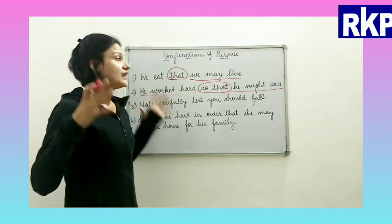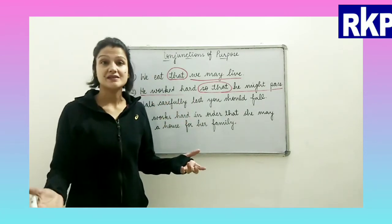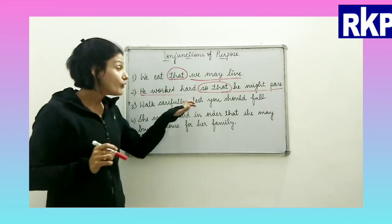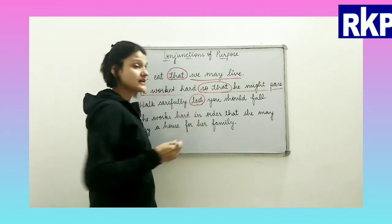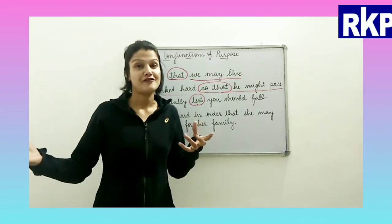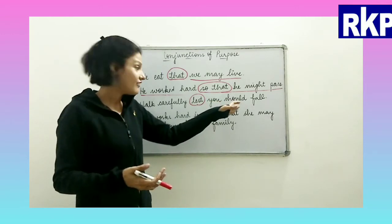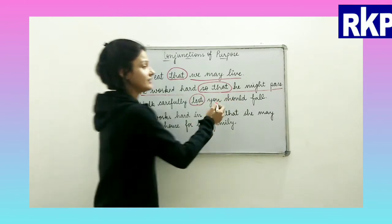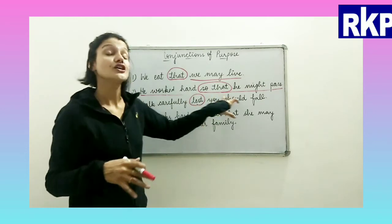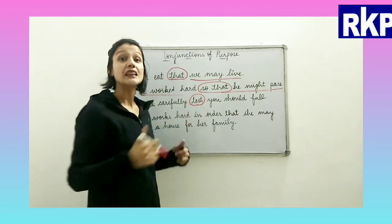'Walk carefully, lest you should fall.' 'Walk carefully' is the independent clause. What is the purpose of walking carefully? Lest you should fall. 'Lest' is the conjunction here. It means 'to avoid the risk of something' — here, to avoid the risk of falling down. Remember to always use 'should' with the conjunction 'lest.'